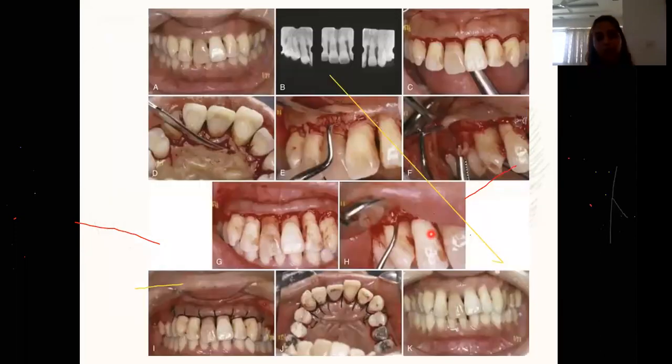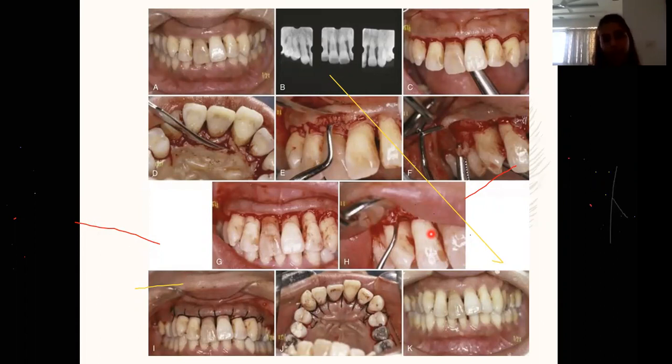In the original articles, they recommended continuous sling sutures approximating the labial or buccal flap and the palatal or lingual flaps.